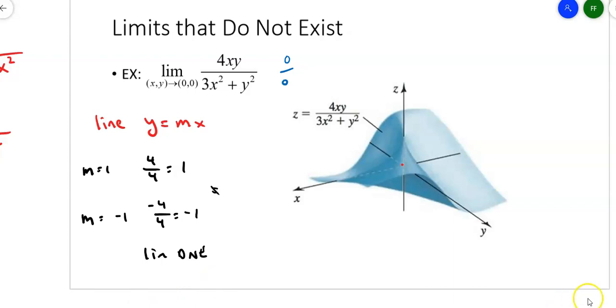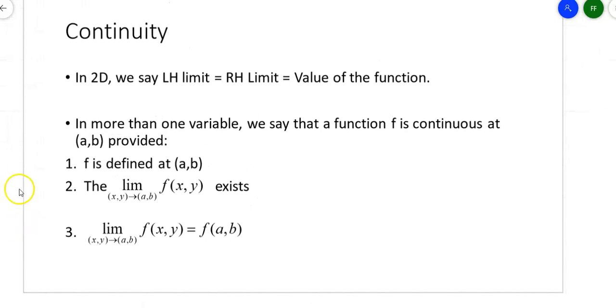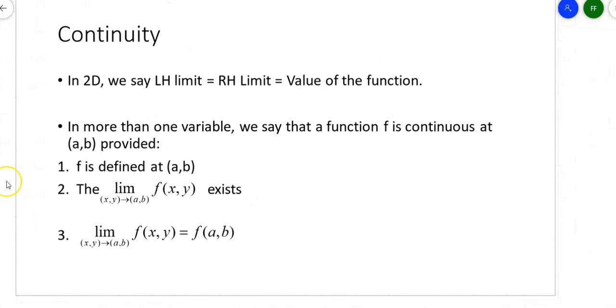Let's talk a little bit about continuity. You know that in calc 1 terms, the left-hand limit has to equal the right-hand limit, has to equal the value of the function. In three dimensions, it's basically the same thing. First, the limit has to exist, and the function has to be defined at that point, and the two values need to be the same.